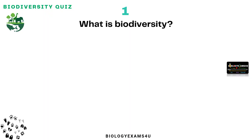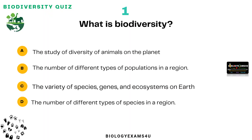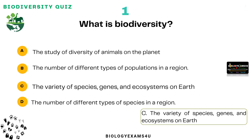Question number one: What is biodiversity? Option A: It is a study of diversity of animals on the planet. Option B: The number of different types of populations in a region. Option C: The variety of species, genes, and ecosystems on earth. Option D: The number of different types of species in a region. You have 10 seconds to answer. The correct answer is: the variety of species, genes, and ecosystems on earth.